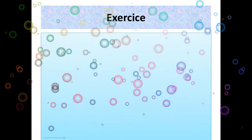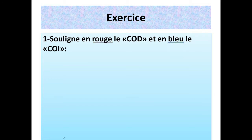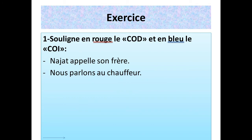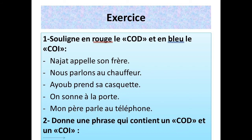Chers élèves, on reste maintenant avec quelques exercices concernant le complément d'objet en général : le complément d'objet direct et le complément d'objet indirect. Pour la première question, souligne en rouge le complément d'objet direct et en bleu le complément d'objet indirect. Les phrases sont : Najat appelle son frère. Nous parlons au chauffeur. Ayoub prend sa casquette. On sonne à la porte. Mon père parle au téléphone. La deuxième question : donne une seule phrase qui contient un complément d'objet direct et un complément d'objet indirect.